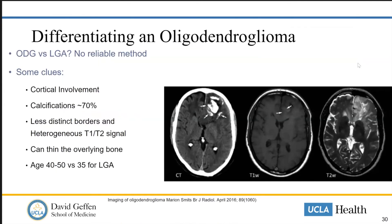One issue is that you don't always know a tumor is an oligodendroglioma based on its initial imaging. If you're intraoperatively deciding whether to resect completely or not, other considerations end up taking priority. There are some ways to try to differentiate whether something might be an oligo versus an astrocytoma.